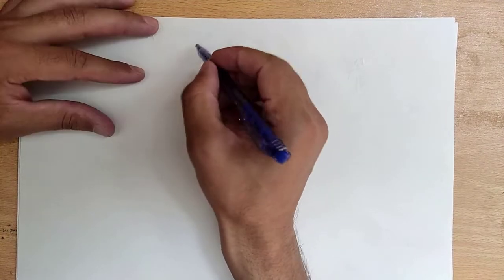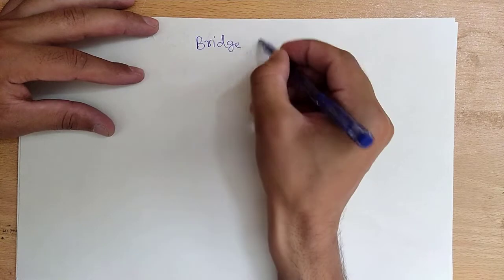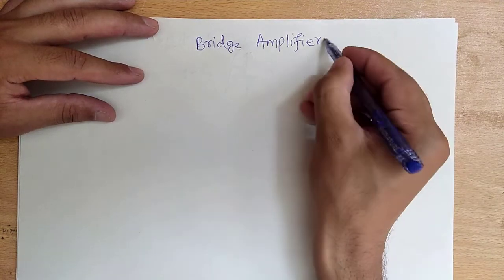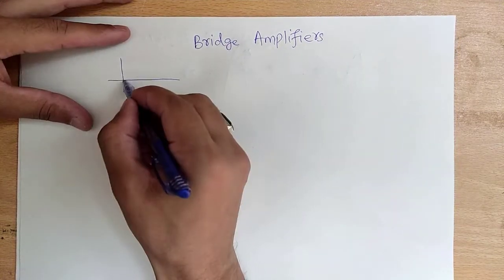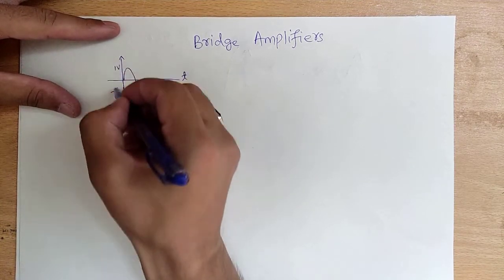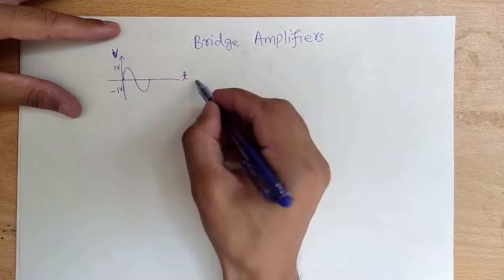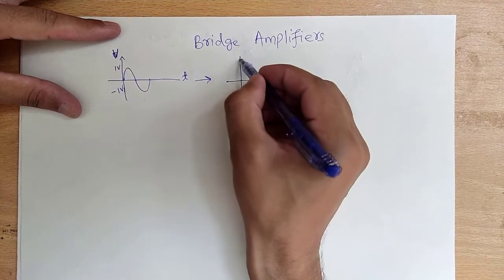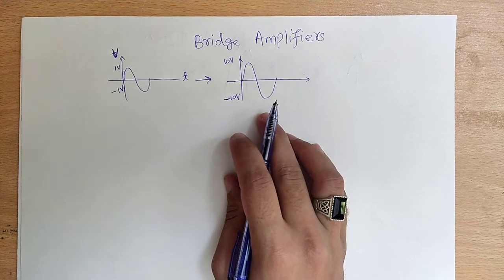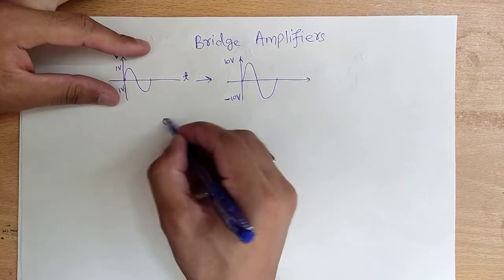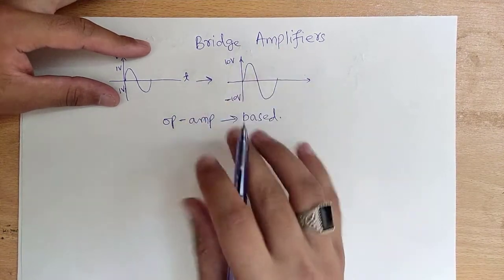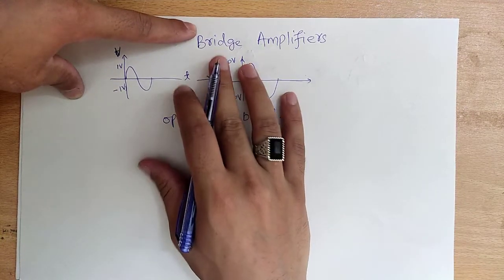In today's video I will discuss bridge amplifiers. As we know, amplifiers are devices or circuits that convert a low voltage signal to a high voltage signal. For example, a sinusoidal voltage of amplitude ±1 volt can be converted to ±10 volt using amplifiers. The most common type is the operational amplifier based amplifier.